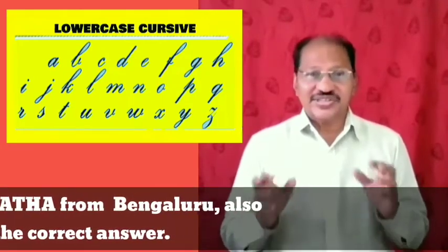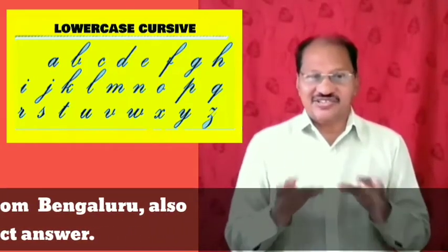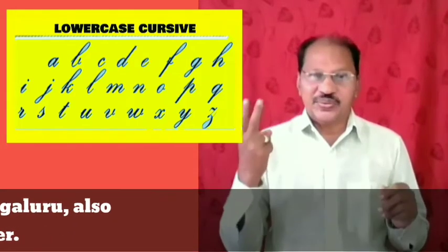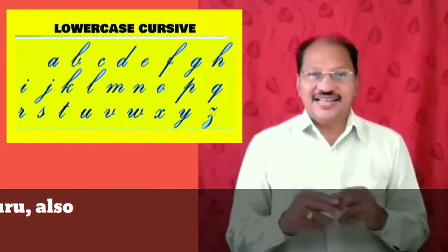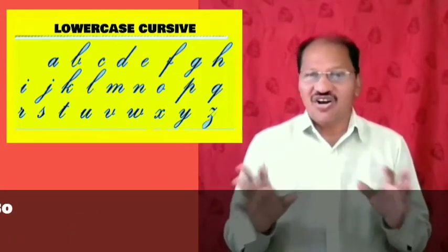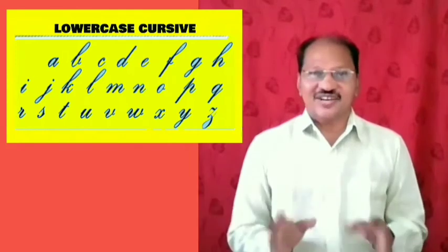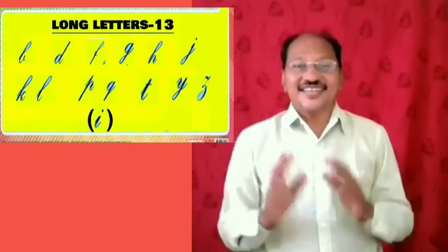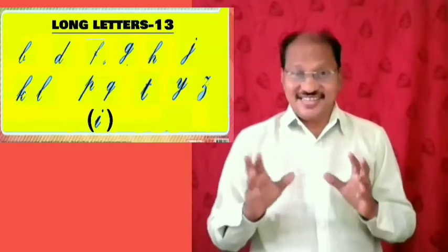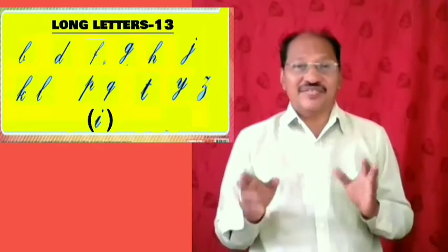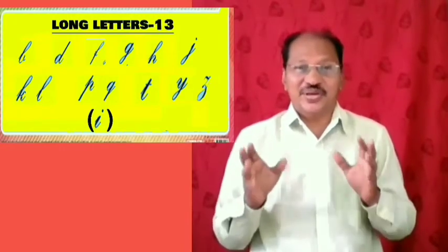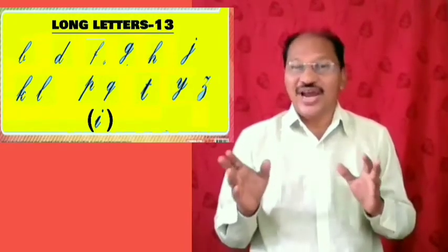According to the shape, the letters of lowercase cursive type are divided into two groups. The first group consists of all long letters and the second group consists of all short letters. There are 13 long letters in group number 1. They are B, D, F, G, H, J, K, L, P, Q, T, Y, and Z.